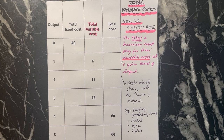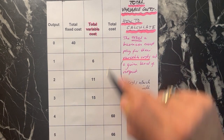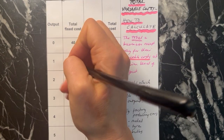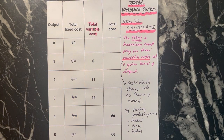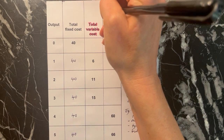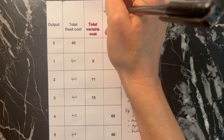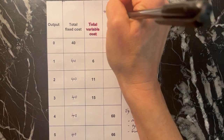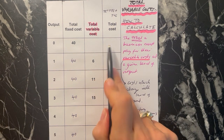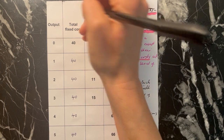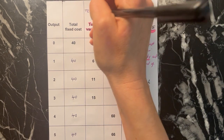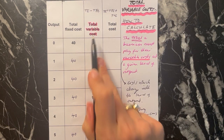Before we look at it in more detail, let's see how you would fill in each column in this table. We know that your fixed cost is always going to be exactly the same. And we know that your total cost is your total fixed cost plus your total variable cost — you're adding these two together to get the total. Therefore, to work out our total variable cost, we do total cost take away total fixed cost.